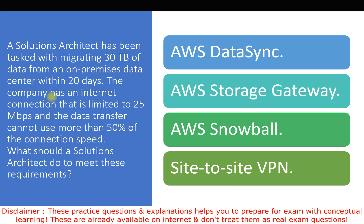If you calculate: migrating 30 TB at 25 Mbps would take around 200 days, and we can only use 12.5 Mbps, making it take even longer. We only have 20 days. So we need to avoid any internet-based option. AWS DataSync, AWS Storage Gateway, and Site-to-Site VPN all use the internet to move data, so they are ruled out. The only remaining option is AWS Snowball — a physical device shipped to your data center where you upload the data and migrate it to AWS. That is the correct answer.